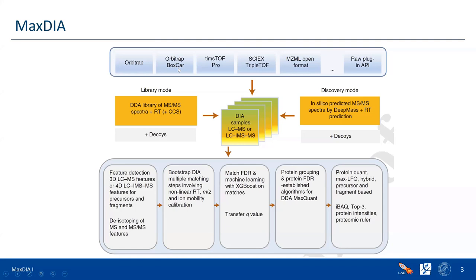In the boxcar scheme, the MS1 precursor data is acquired with high dynamic range boxcar scan modes, and the MS/MS data is acquired in the normal DIA way. We also support TIMSTOF Pro data. The difference from Orbitrap is that here you also have a high ion mobility dimension in your data, and the DIA workflow is fully aware of this new dimension, including acquisition schemes with peculiar shapes in the mobility dimension.